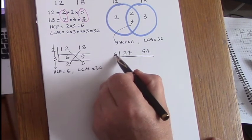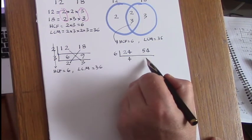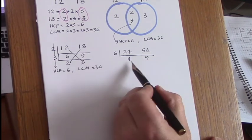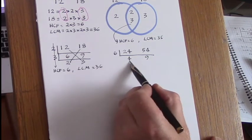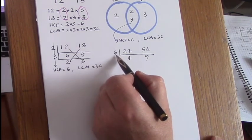So we can see that these two numbers are divisible by 6, so we'll divide them. 6 into 24 is 4, and into 54 is 9, and straight away we've arrived at co-prime numbers, so no more division can take place.